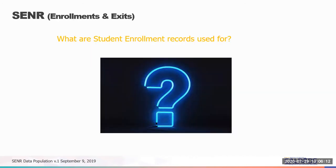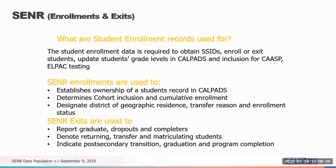So what is the student enrollment record used for? The student enrollment data is required to obtain SSIDs, enroll and exit students, update student grade levels, and it allows students to be included in CAASPP and ELPAC testing. Student enrollments are used to establish ownership of student records in CALPADS, determine cohort inclusion and cumulative enrollment counts. Also, they are used to designate district and geographic residents, transfer reasons, and enrollment statuses. SENR exits are used to report graduates, dropouts, and completers.